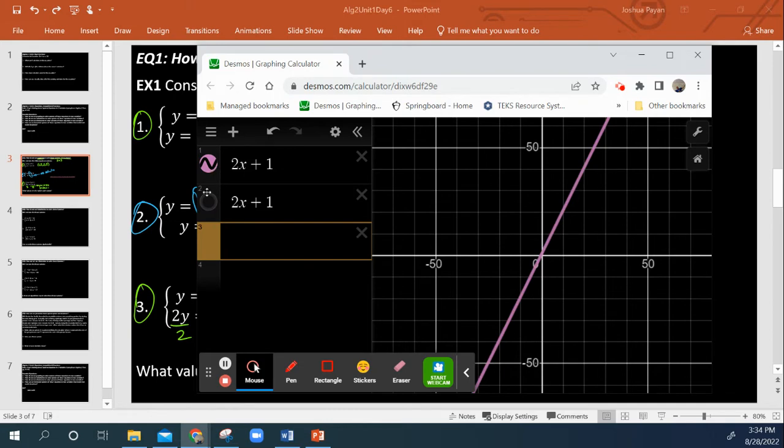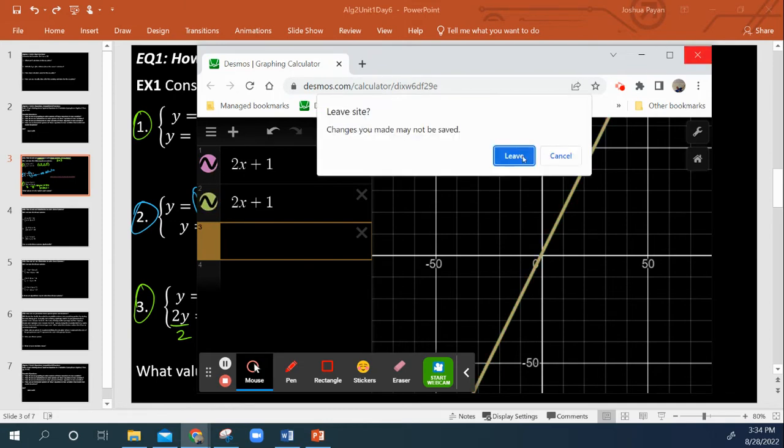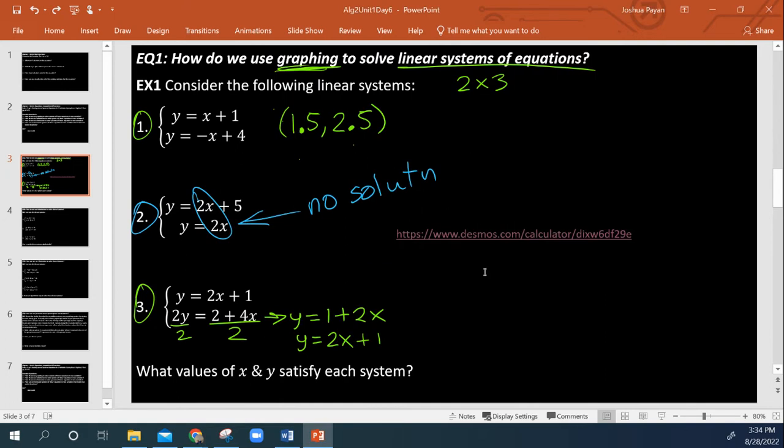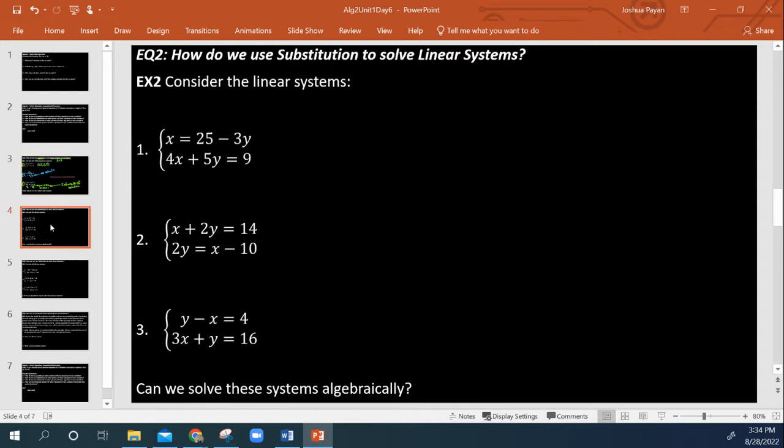And then, look at what we get again, 2X plus 1. So what does that mean? Well, that just means that they're both the same equation. And what that means for us as far as what is the solution is there is an infinite number of solutions. So pretty straightforward with the graphing. So now let's start getting into the algebra.